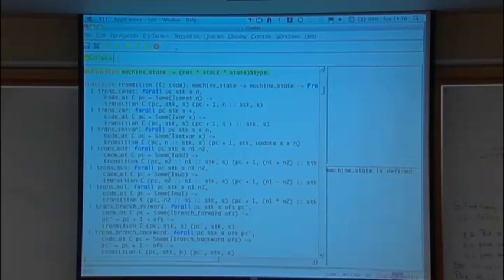And basically there's one case for each instruction. They are all of the form: if the code at PC in C exists and is I const of n, for instance, then I transition from PC stack store to here PC plus one and const stack. So I'm pushing and the same store. So you can read that pretty comfortably, I think.